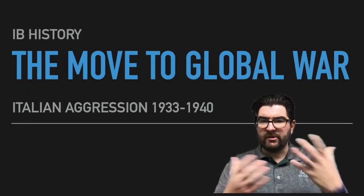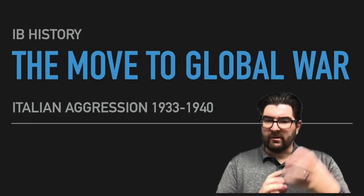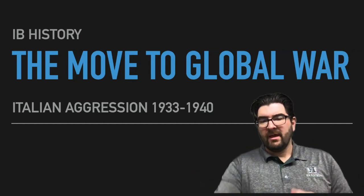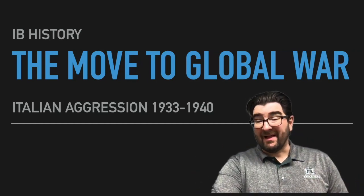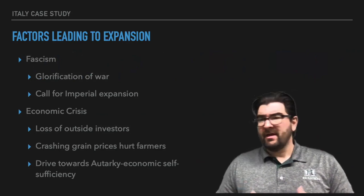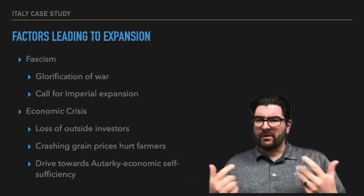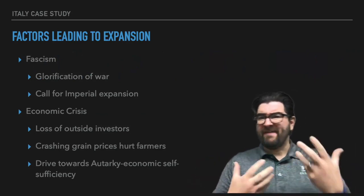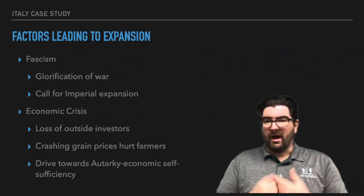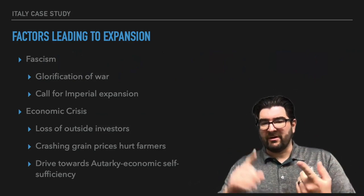Today we're going to continue our walk through the move to global war, the Italy and Germany case studies, by talking about Italian aggression through the 1930s. We want to step back a little bit and remember those factors in Italy that are going to lead to expansion, this drive for aggressive expansion.